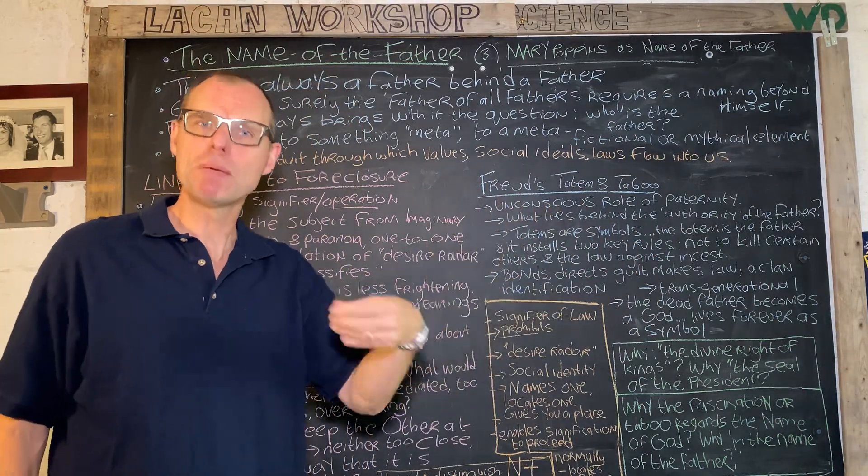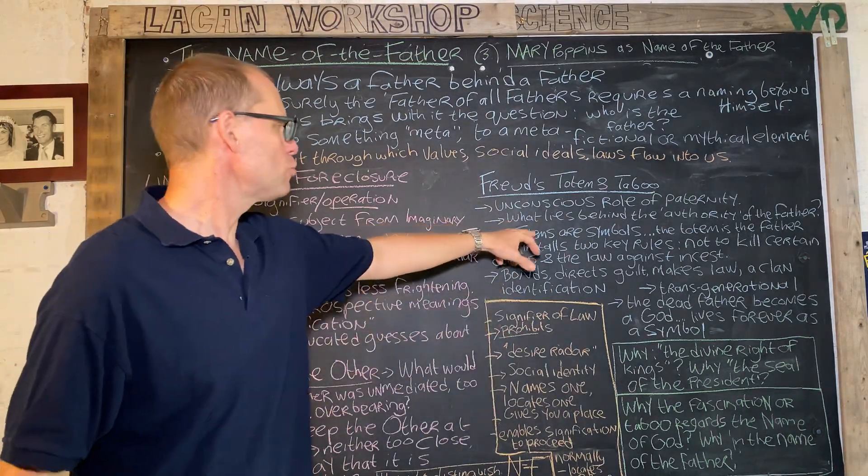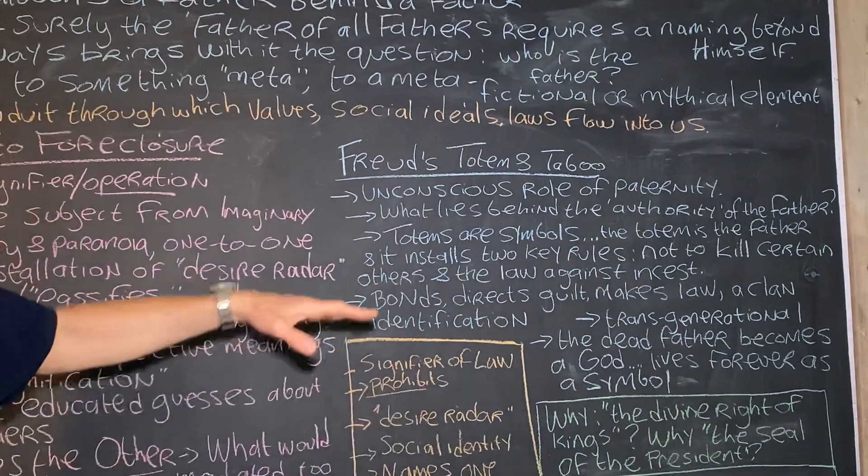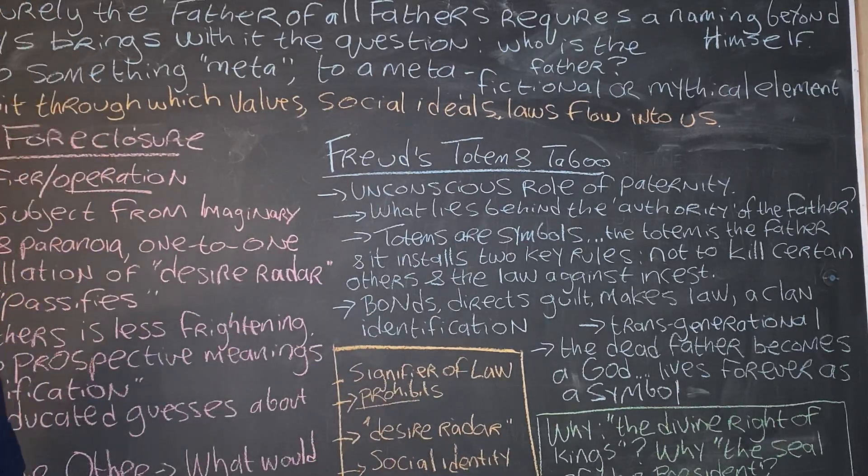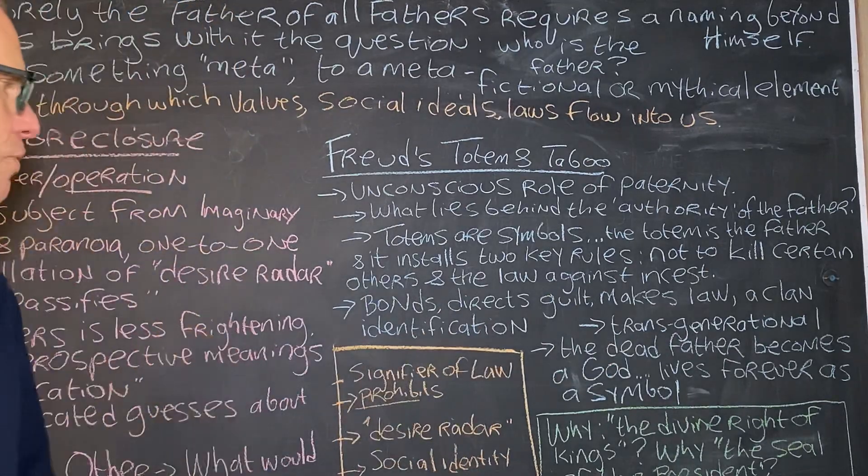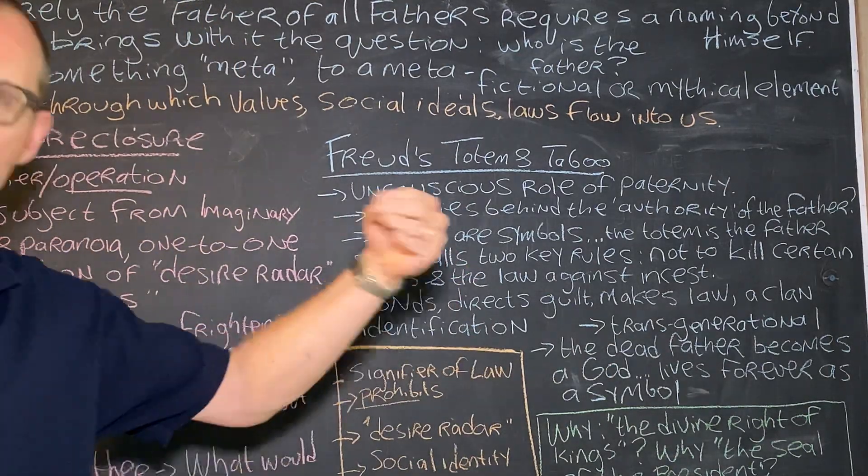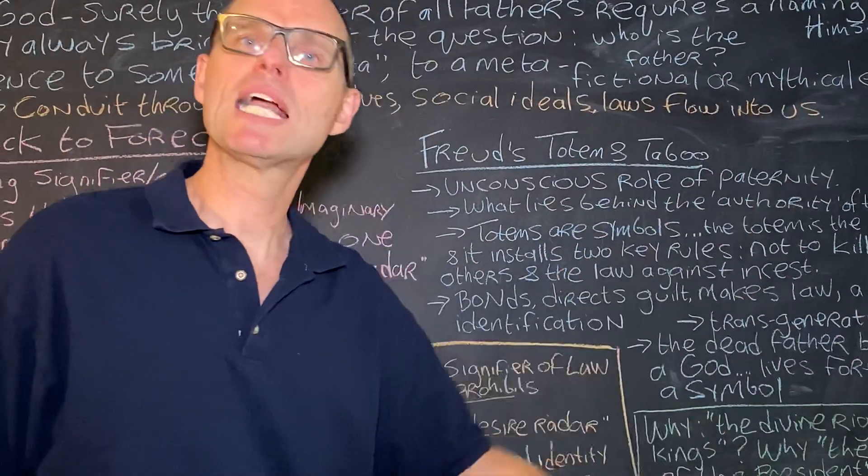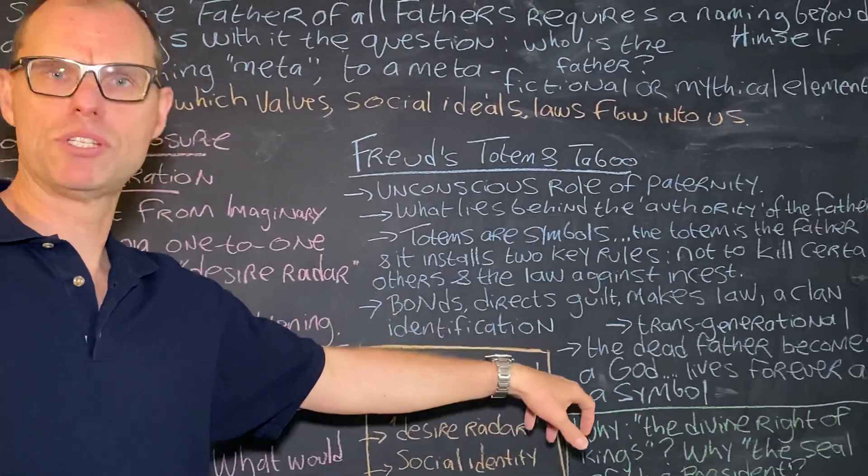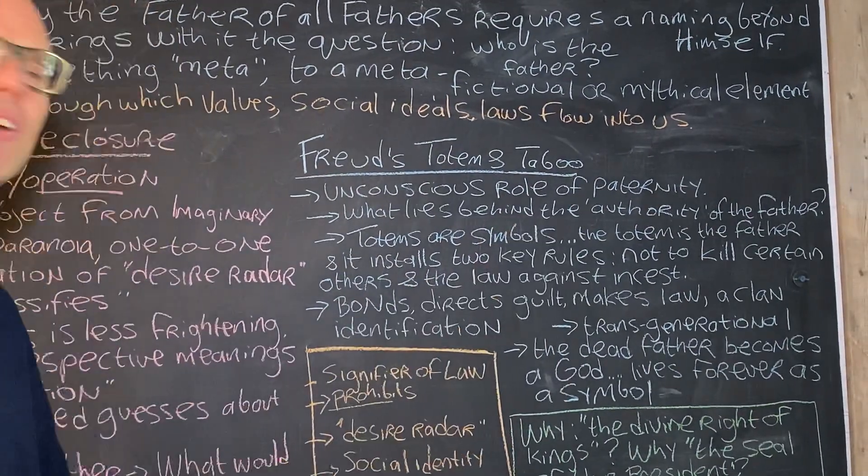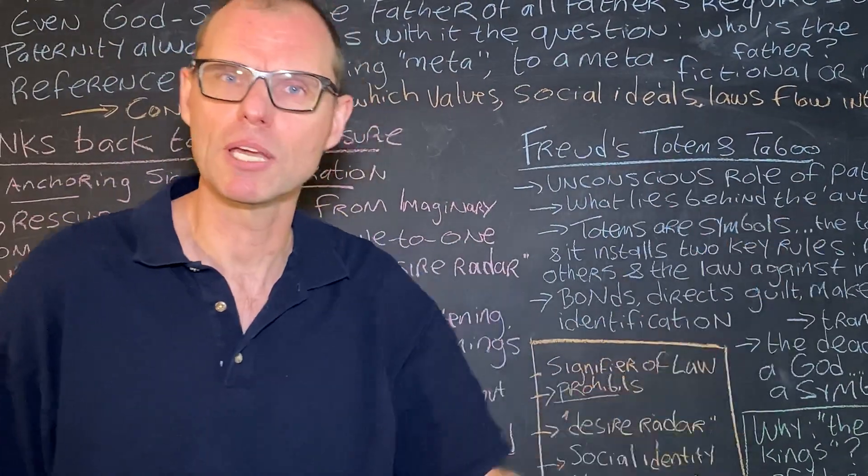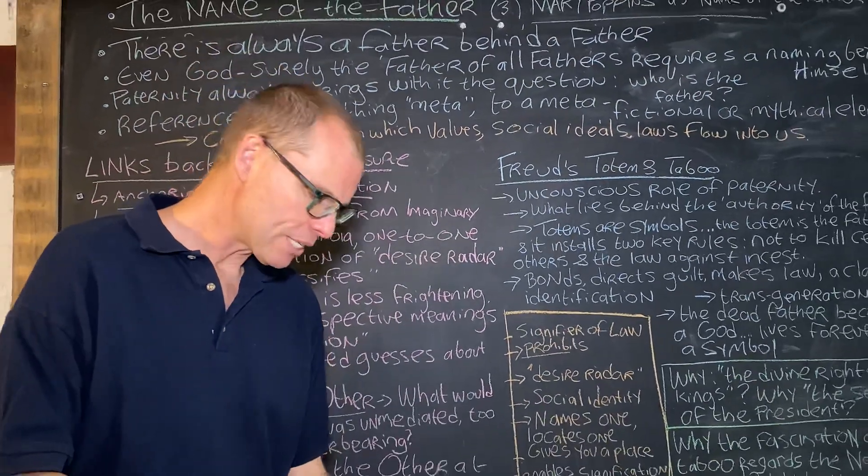Back to Freud: 'One day the brothers who'd been driven out by this primal horde came together, killed and devoured their father, and so made an end of the patriarchal horde. The totem meal, which is perhaps mankind's earliest festival—shout out here to little moments about jouissance—mankind's earliest festival would thus be a repetition and a commemoration of this memorable and criminal deed, which was the beginning of so many things: of social organization, of moral restrictions, and religion.' So totems are symbols. You kill the primal father, the father lives on in the symbolized rules that encapsulate your identity as members of this clan. What the totem does then is it installs two key rules: not to kill certain others and the law against incest. It bonds us, it creates a social identity, it directs our guilt, and it makes the law. It also involves a transgenerational dimension.